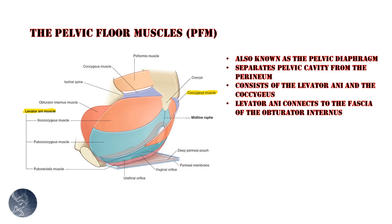The coccygeus muscle makes up the posterior part of the pelvic floor and connects to the coccyx, or the tip of the tailbone, and this muscle functions to pull the coccyx forward.